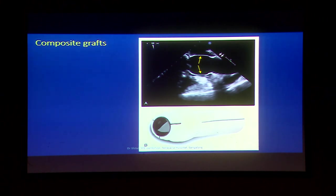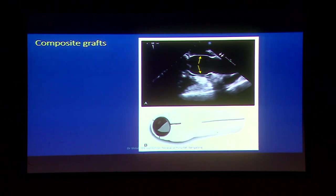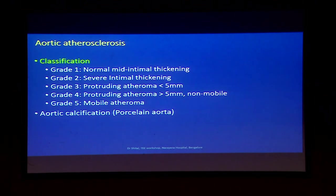You may see composite grafts being used, which include a mechanical valve. Post-operatively the appearance will be shown with yellow arrows — that portion of the graft has created sinuses of Valsalva and resembles the shape of an aortic root. The mechanical valve is usually the tilting disc type. That covers aortic dilation, aortic aneurysm, and aortic dissection.